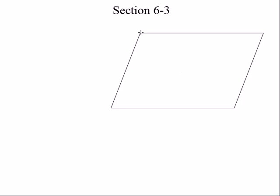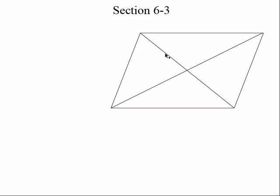Let's talk diagonals now. So let's put some diagonals in there — here's a diagonal, and there's a diagonal. What about the diagonals? If they bisect — it's not just like this one's being bisected, but this one's being bisected as well. So they're both bisecting each other. So if the diagonals bisect each other, then it's a parallelogram, right? Remember all that stuff?